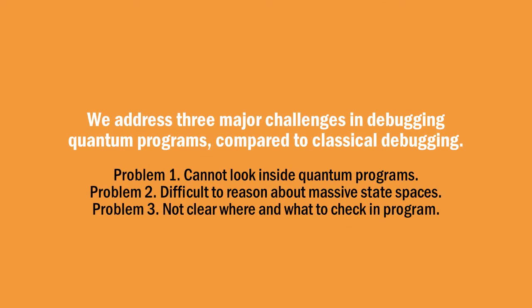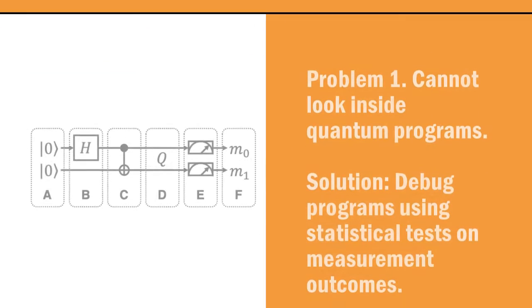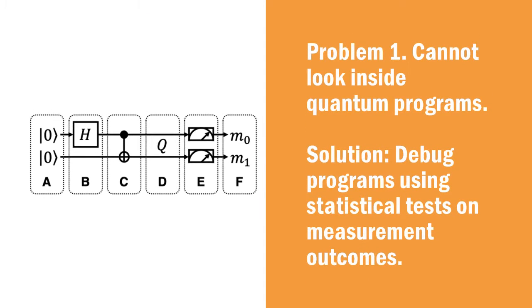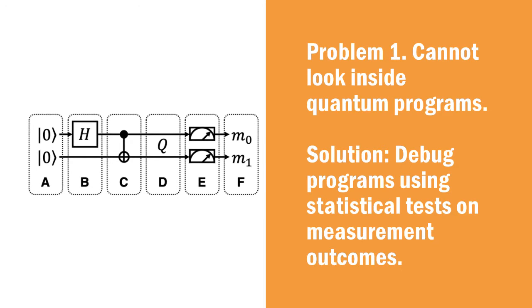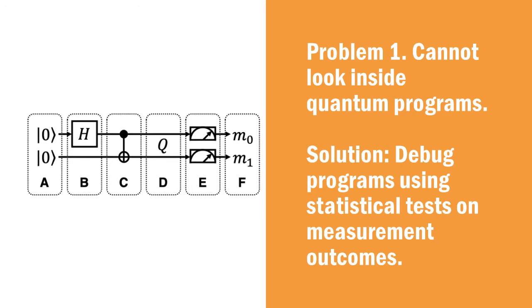We address three major challenges in debugging quantum programs compared to classical debugging. The first problem is that we cannot easily look inside quantum programs. Our solution is to do debugging by using statistical tests on only the measurement outcomes.